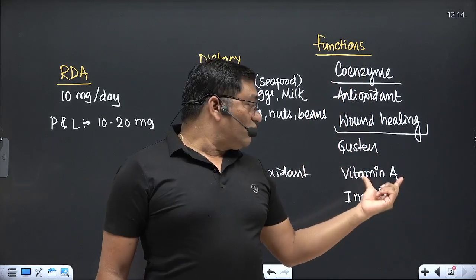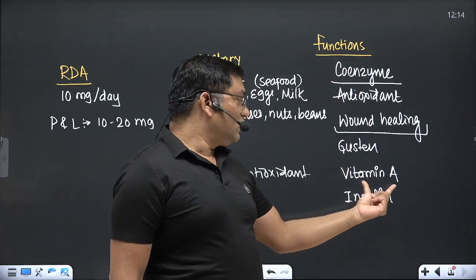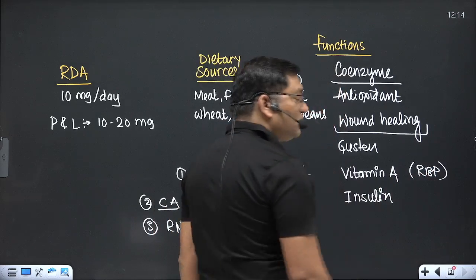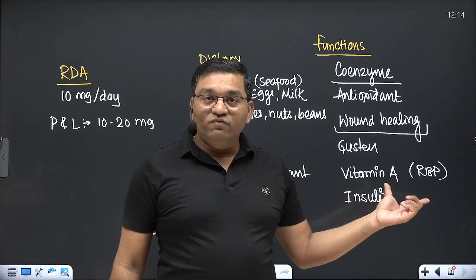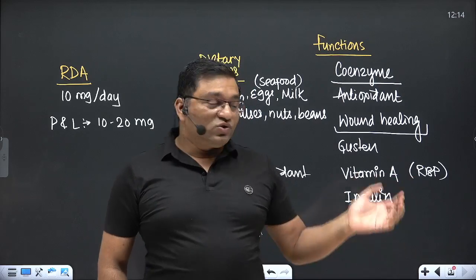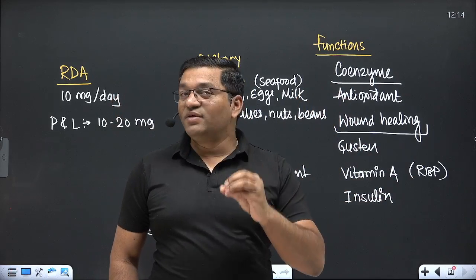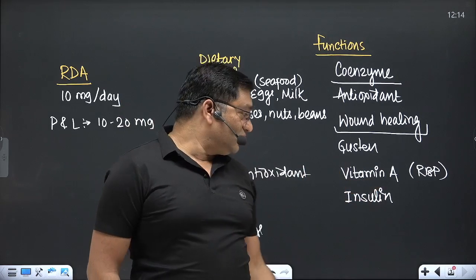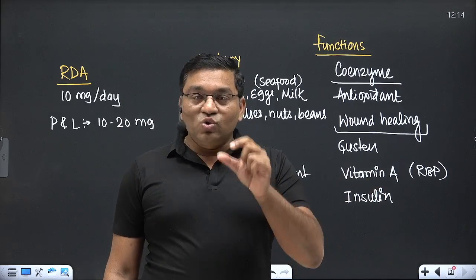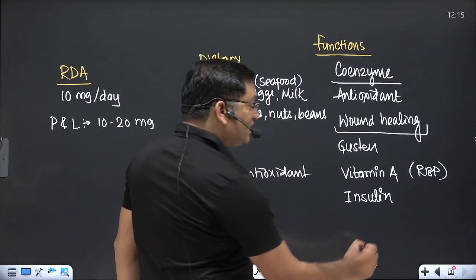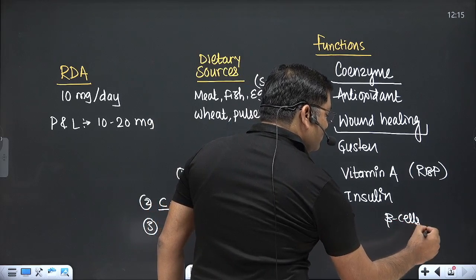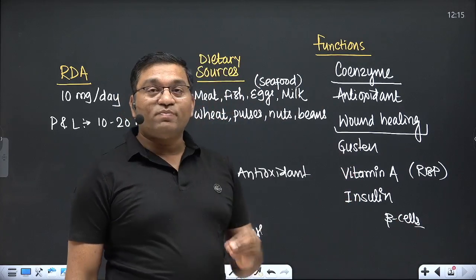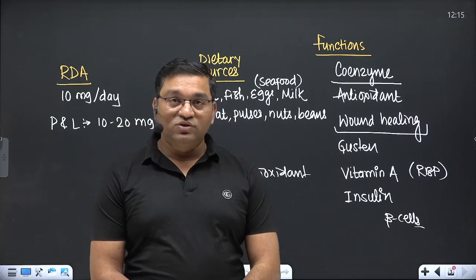Zinc is important for maintaining vitamin A levels in the serum by facilitating the synthesis of retinol binding protein. Therefore, zinc deficiency can be associated with vitamin A deficiency and features like night blindness. Zinc is also important for the storage and secretion of insulin from the beta cells of the pancreas, and for spermatogenesis.